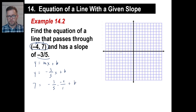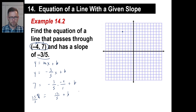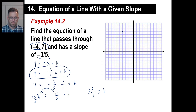To find b, we need a value for x and a value for y — and there they are: x is negative four, y is seven. So let's stick it in there: seven equals negative three fifths times negative four over one, plus b. Negative times negative is positive, so that gives us 12 over 5 plus b. Writing seven as 35 fifths: 35 fifths minus 12 fifths is 23 fifths. So b equals 23 fifths. Our equation is y equals negative three fifths x plus 23 fifths.